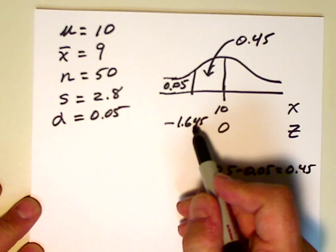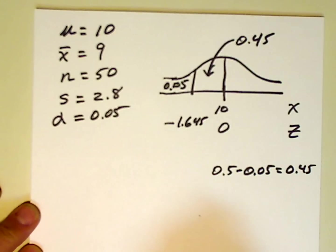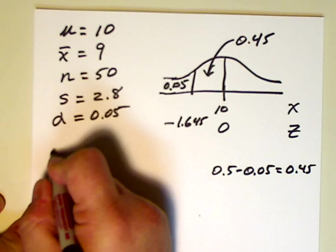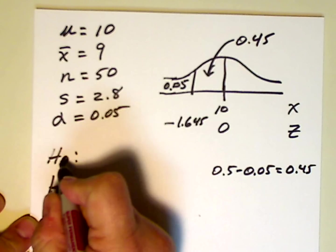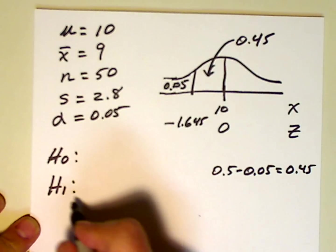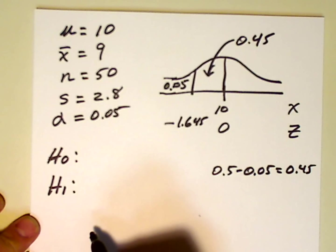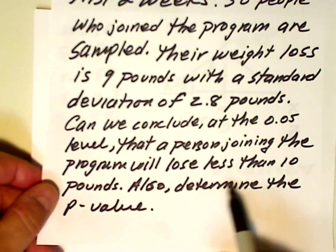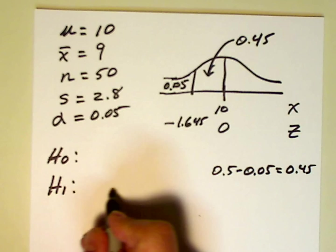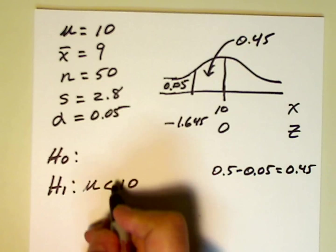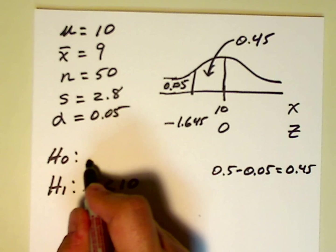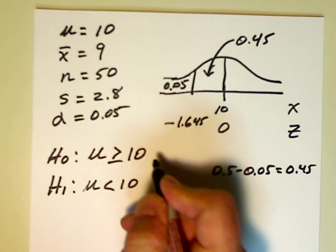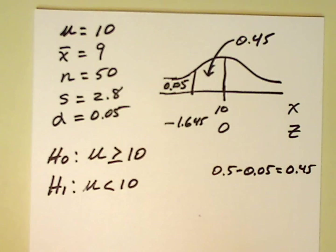Now we know that the critical value is -1.645. We can set up our alternate and null hypotheses, H0 and H1. H1 is the hypothesis I work with first, and the question asks if we can conclude that the mean weight loss is less than 10 pounds, so H1: mu is less than 10. The null hypothesis H sub 0 is mu greater than or equal to 10 — we just reverse what we have in the alternate and add an equal sign.